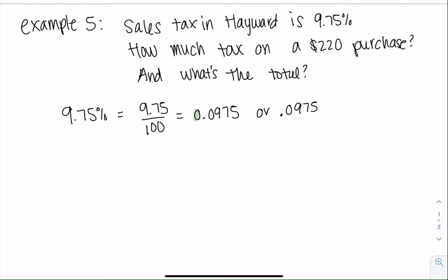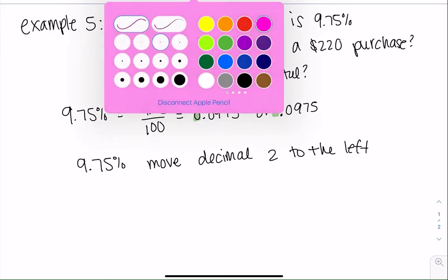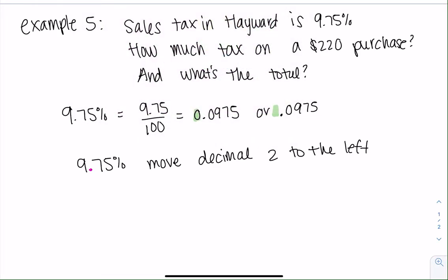This zero in the front, there or not, it's the same thing. If you're a little bit more familiar with this, the shortcut is just to move over two to the left. And what I mean by that is I'm going to go ahead and just take this current decimal place, go 1, 2. If there's any gaps, you add a zero. So either way, we still get 0.0975.